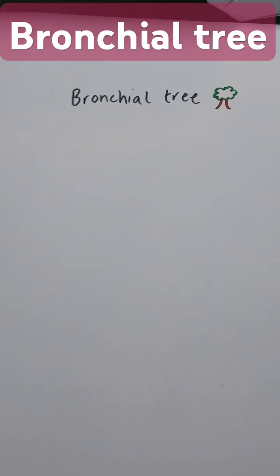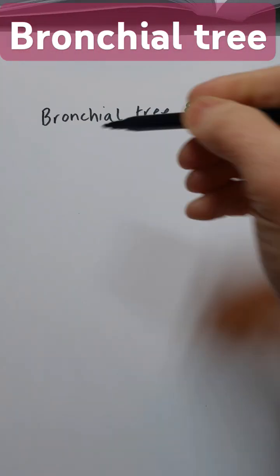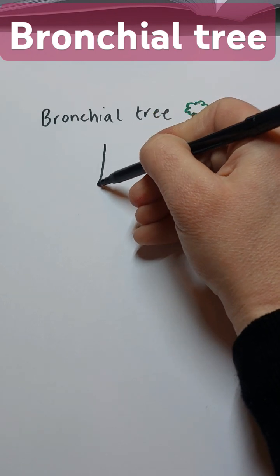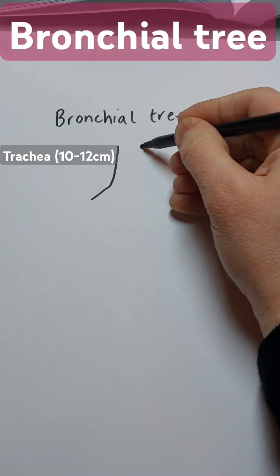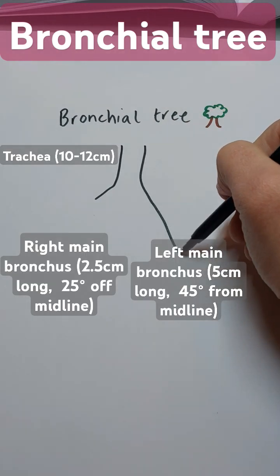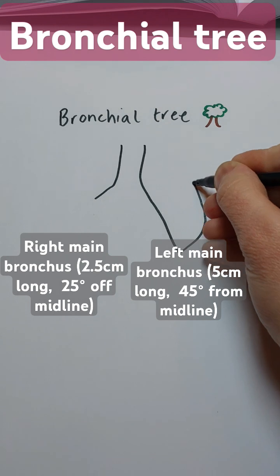Today we're going to look at the bronchial tree. First of all, draw the trachea straight down. This is normally 10 to 12 centimeters.